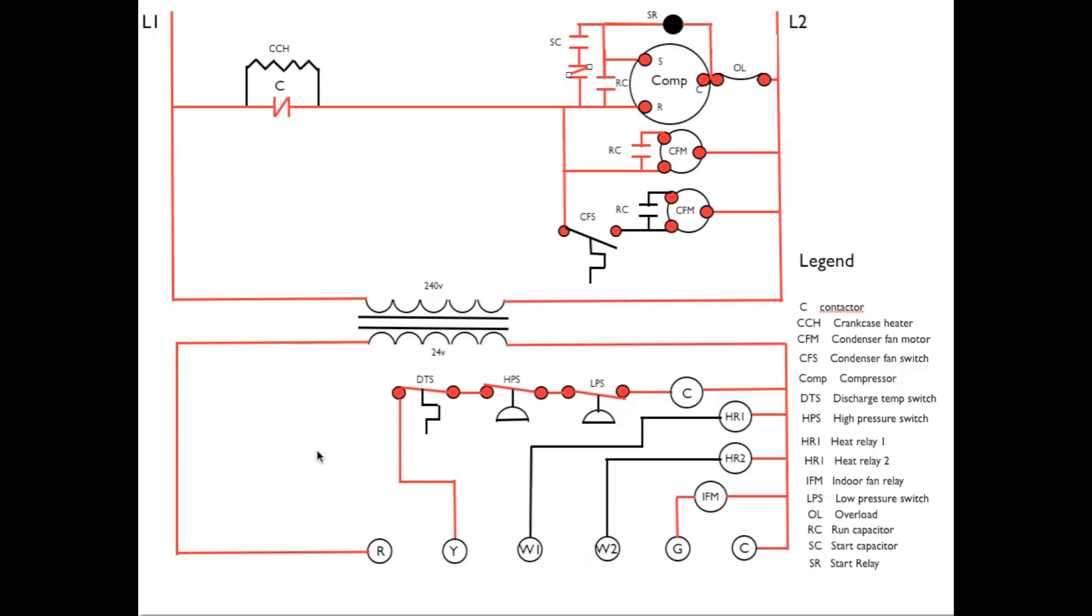Okay, let's do a sequence on a call for cooling. Power is going to pass from R to Y through the thermostat, which is not mounted in here, but we will simply assume it's there so that the power does pass from R to Y.